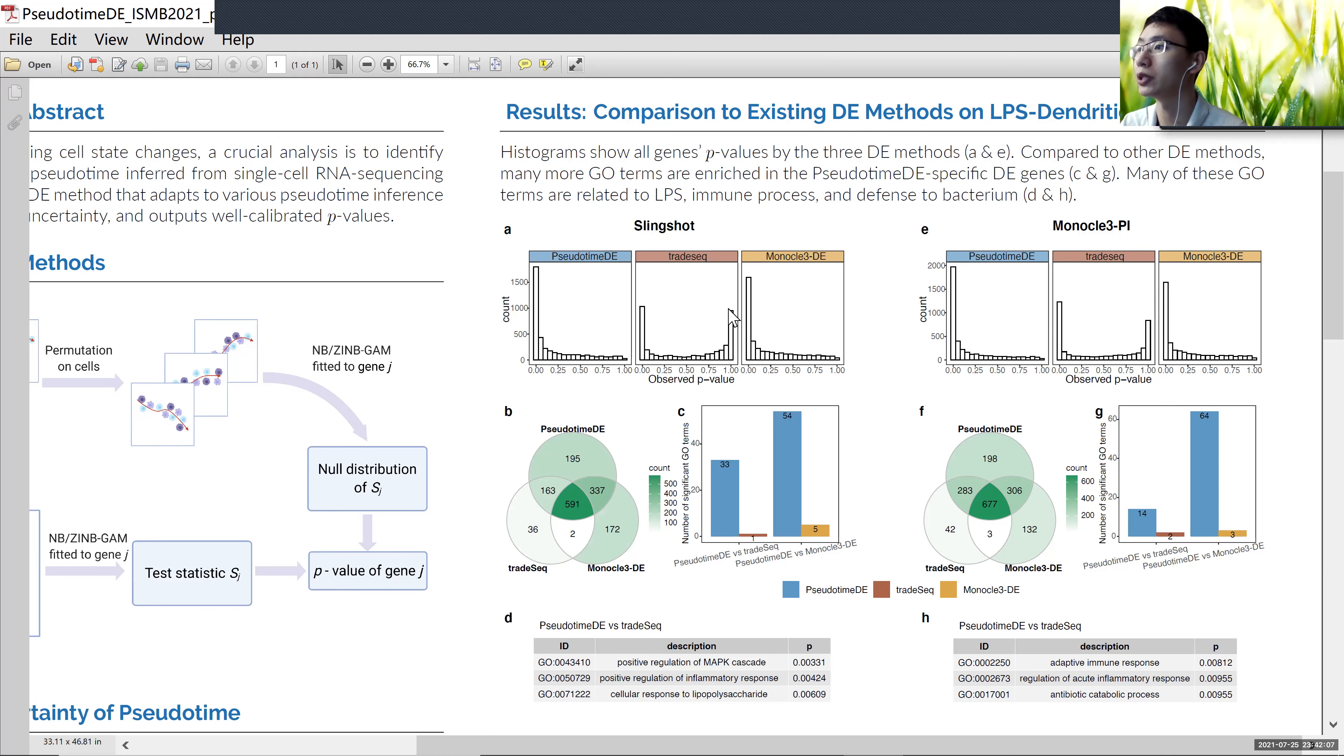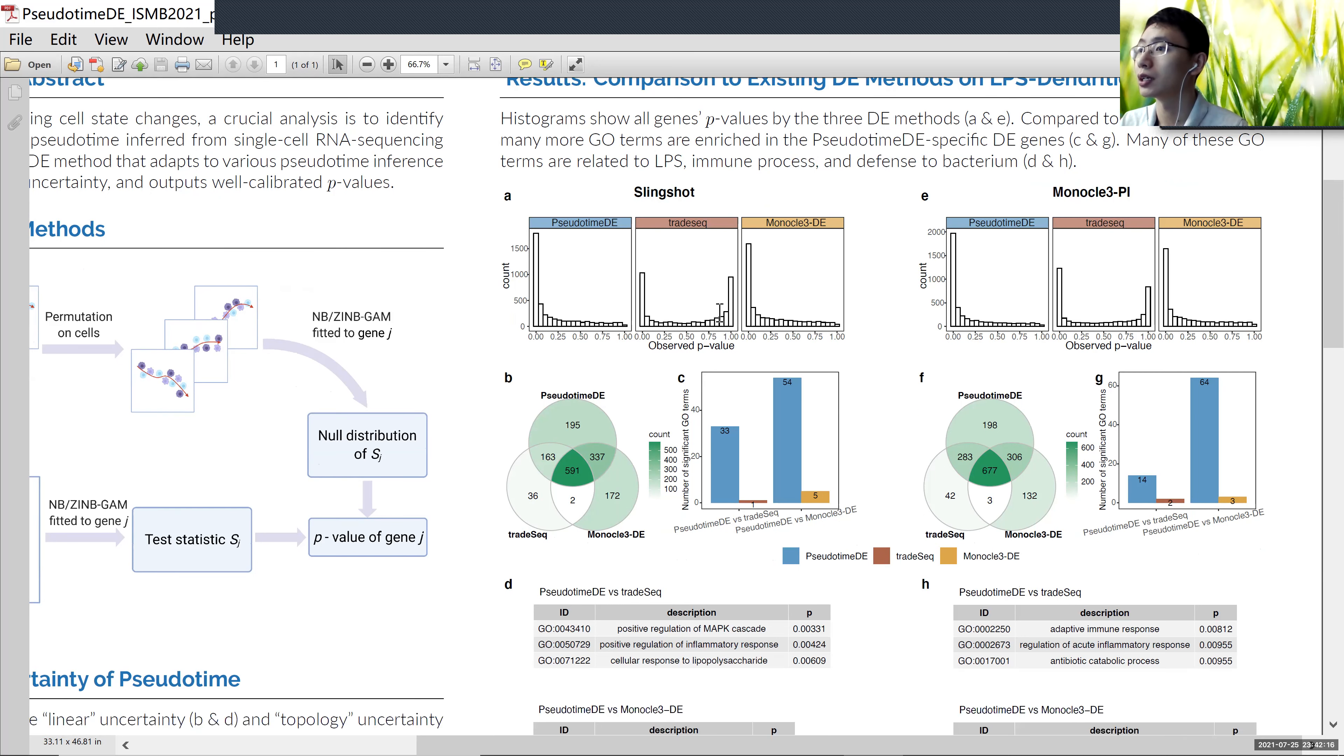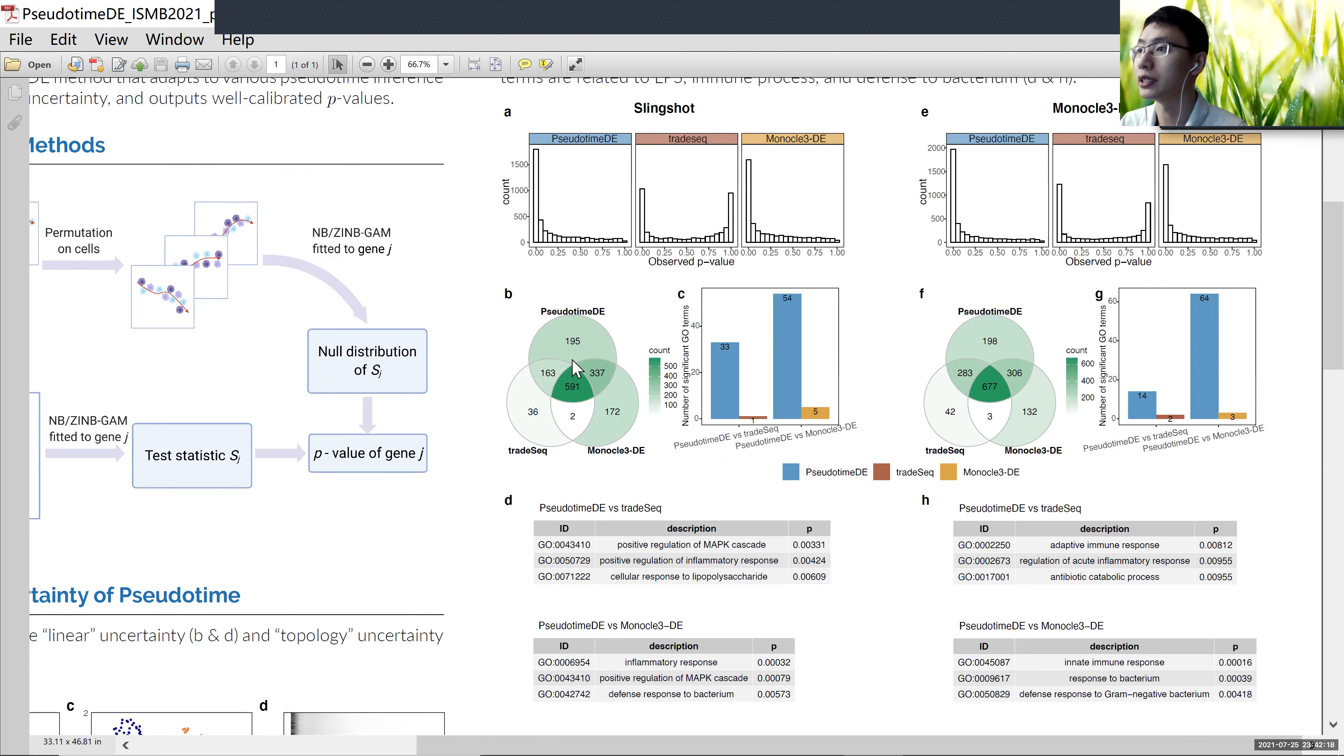This means that their p-values are not well calibrated and are not uniformly distributed under the null.